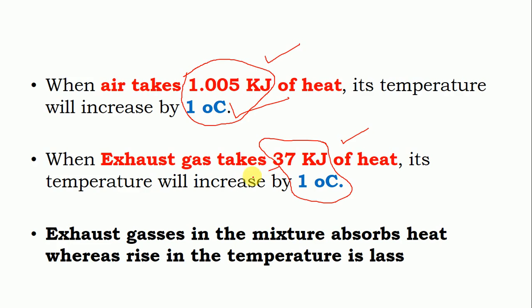If I supply 37 kilojoules of heat to air, its temperature will increase by 37 degrees Celsius — because if 1 kilojoule raises it by 1 degree, then 37 kilojoules raises it by 37 degrees. Whereas for exhaust gas, 37 kilojoules would raise the temperature by only 1 degree Celsius. From this concept, you should understand that even though more heat is supplied to exhaust gases, the rise in temperature is very small compared to an air-fuel mixture.